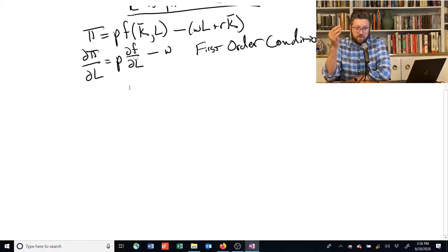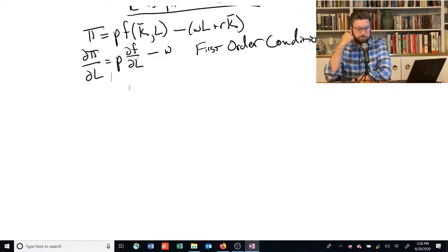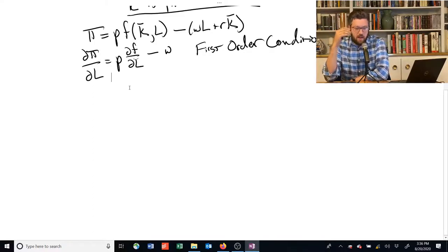Well, the first order condition is the derivative of profit with respect to labor or any different input. And in this case, we're using labor. What that's telling us is that as we change labor, how does profit change?